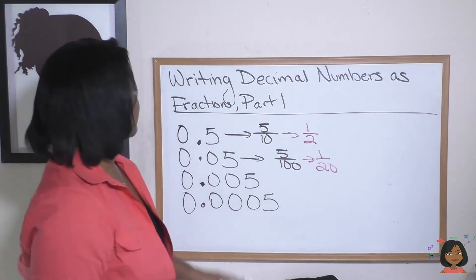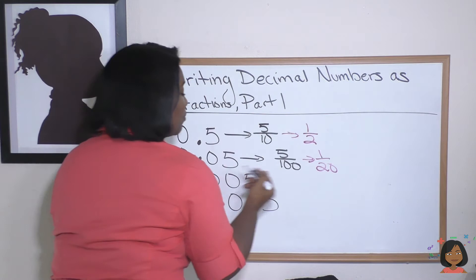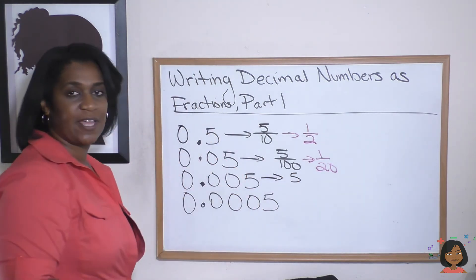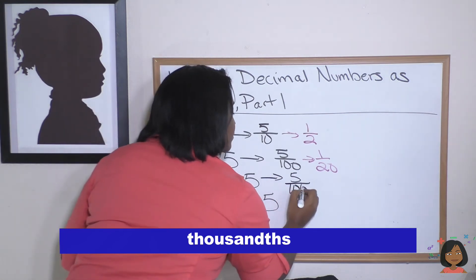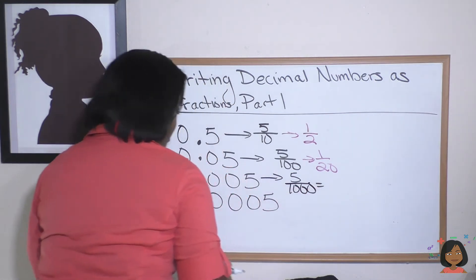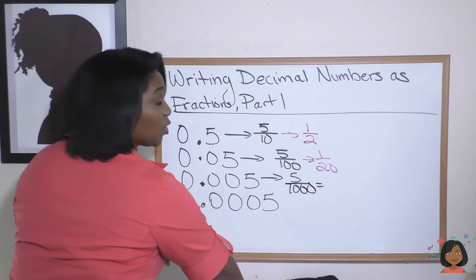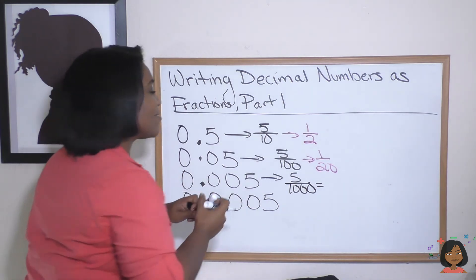Let's get it going. This one we have a five, so we put our five over what place is it in? The thousands place. So let's put it over a thousand, and one into five into a thousand is two hundred.